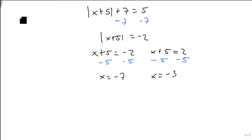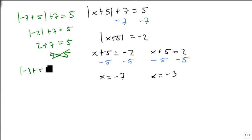Well, let's plug these in. So if I plug negative 7 in: -7 + 5 = -2. The absolute value of -2 is 2. 2 + 7 = 9. 9 does not equal 5. And if we do the same thing with the -3, we'll see the same thing. And so we find out that both of our answers don't work.